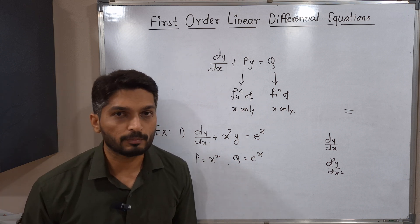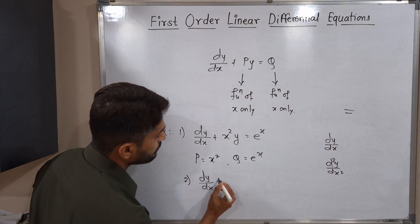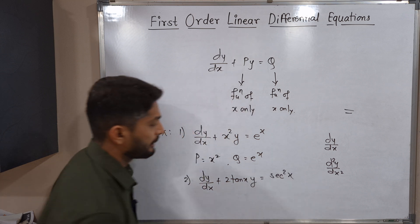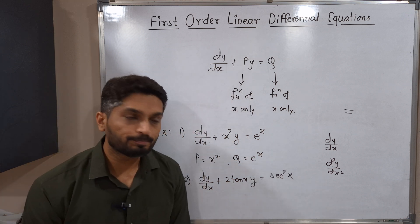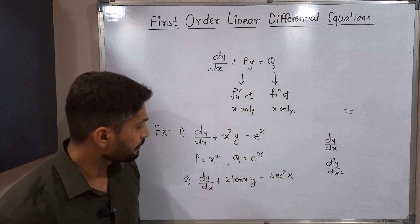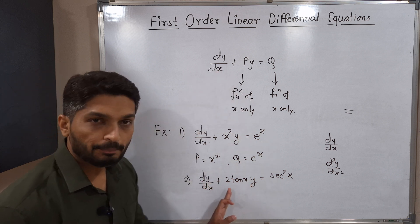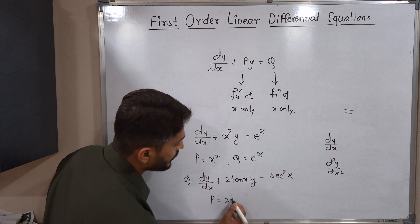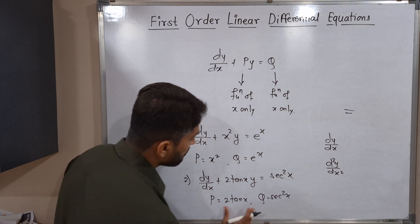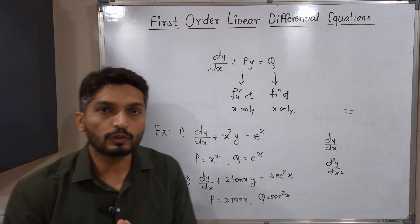Now I'm giving you the next problem — you have to tell me what P and Q are. The equation has terms: dy/dx, then a multiple of y, and a right-hand side. We have dy/dx as the first term, 2tanx as the coefficient of y, and sin²x on the right-hand side. So P = 2tanx and Q = sin²x, and both are functions of x. These are a few examples of first order linear differential equations.